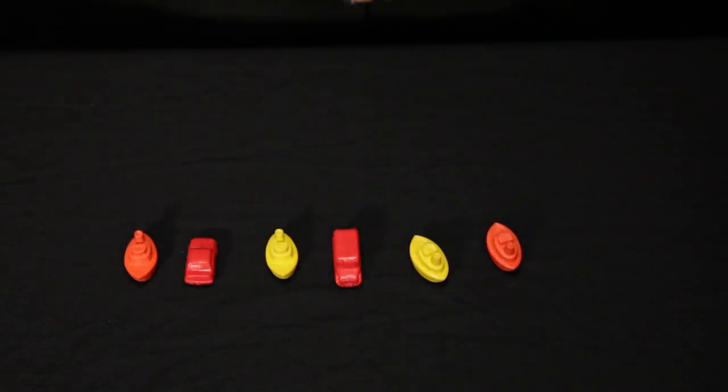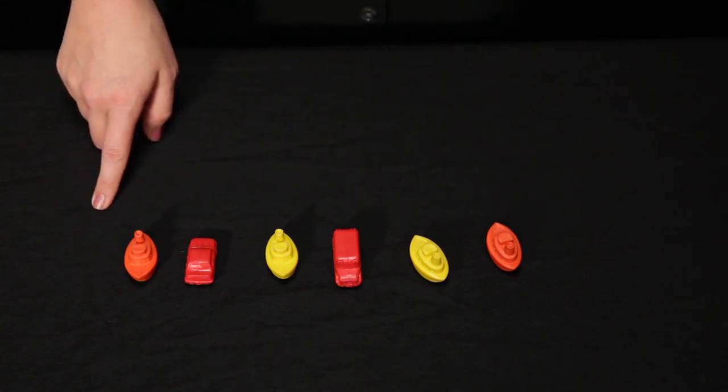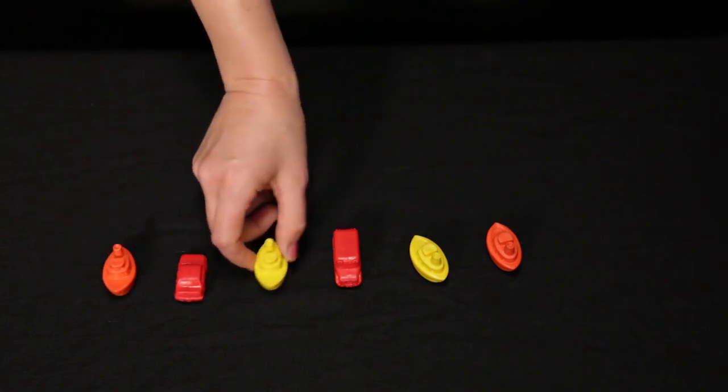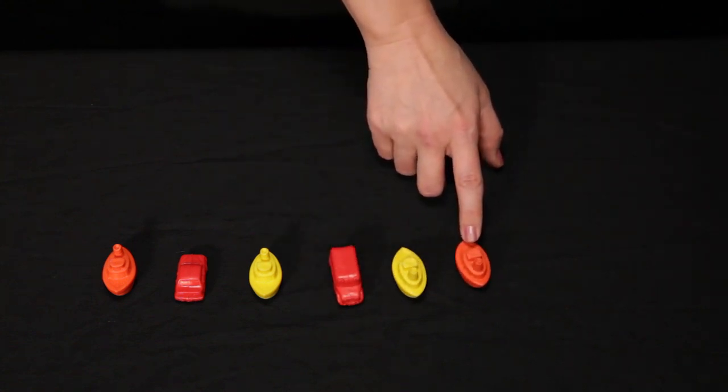Now the third counting principle is cardinality, which indicates how many are in this set. When I counted this set, one, two, three, four, five, six, the last number I said was six,